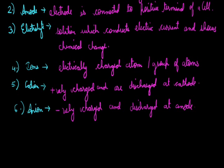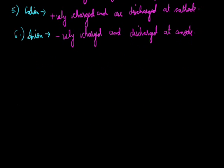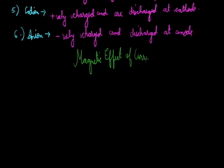Apart from chemical effect, current also has a magnetic effect. So now we will discuss about its magnetic effect. The magnetic effect of current can be noticed in electric bells. Whenever there is a moving magnet it generates electric current, or we can also say that electric current can produce a magnetic effect. This can be clearly shown in the electric bell, in which there is a coil through which whenever electric current flows it behaves like a magnet.